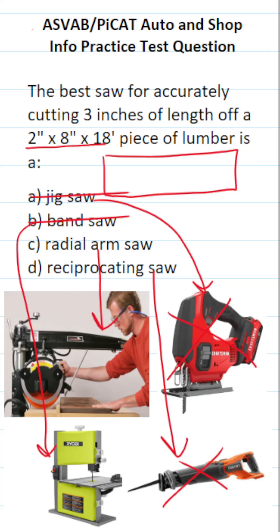And finally, C is a radial arm saw. It's this one right here. As you can see, it has a base where you can lay your lumber down so it doesn't move while you're cutting it. It's going to be the most accurate saw to cut three inches off a 2x8. So this one is going to be C, radial arm saw.